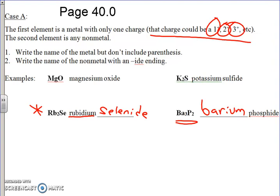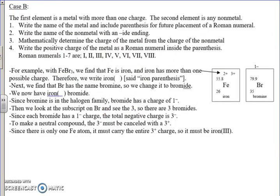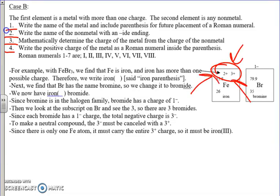So now we're going to go to the case that's slightly more difficult. In this case, the first element is a metal with multiple charges in its element box, and the second element is any non-metal. There are four steps: write the name of the metal and include parentheses for future placement of a Roman numeral; write the name of the non-metal with an -IDE ending; mathematically determine the charge of the metal from the charge of the non-metal; and then write the positive charge of the metal as a Roman numeral. These are metals with multiple charges in the box — for example, a two positive or a three positive to pick from — and we now have a skill to figure out which one it is.